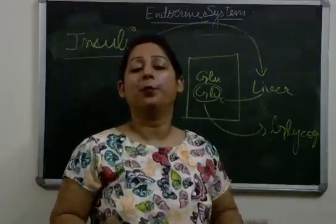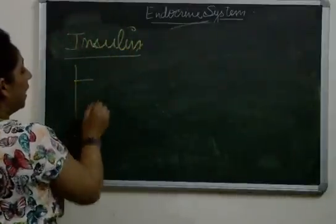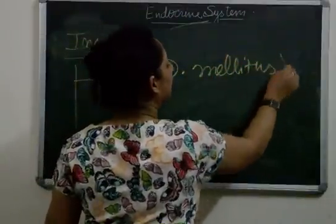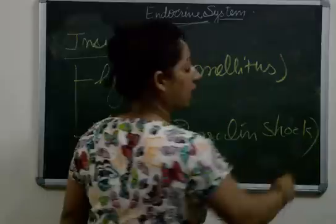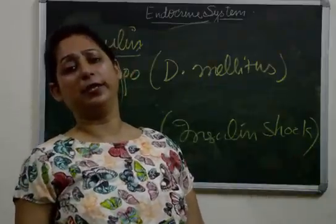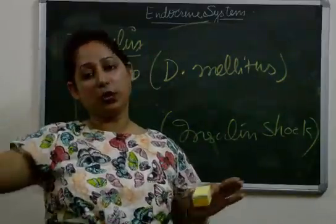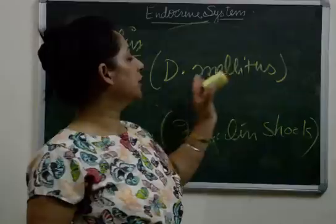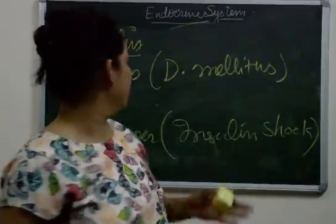If there is under- or over-secretion of insulin, it leads to certain diseases. Hyposecretion — or under-secretion — of insulin leads to a condition known as diabetes mellitus. With less insulin, the message to convert glucose into glycogen is not sent to the liver, so glucose remains in the bloodstream, raising blood sugar levels. Symptoms of diabetes mellitus include passage of sugar in the urine and feeling excessively thirsty.